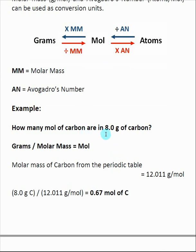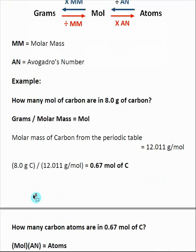In this example, I've been given 8 grams of carbon, and I need to find out how many moles of carbon are in there. So I have grams, and I want to find moles. So what I need to do is divide by the molar mass of carbon. So I go to the periodic table and I grab that. Molar mass of carbon, 12.011 grams per mole. I take the grams of carbon, divide by the molar mass, that tells me that there is 0.67 moles of carbon in the 8 grams of carbon.